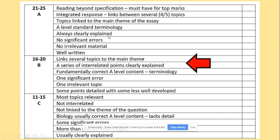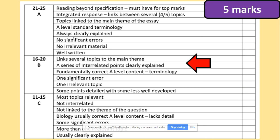To get into the top band, you cannot afford any significant errors. Your topics must always be clearly explained — 'why', 'how', 'so what' — using A-level standard terminology. You need to write a good essay using four to five paragraphs covering different topics from different parts of the specification. If you'd like to really get 25 marks, you can read beyond the specification, but this only gives you one additional mark, so 24 marks is really good if you can get it without going beyond specification.